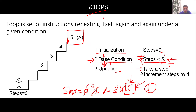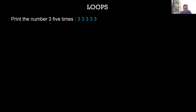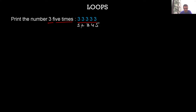We'll understand loops more clearly when we see the implementation using flowcharts. Let's say we have to print the number 3 five times. In loops we have three components: initialization, base condition, and updation.